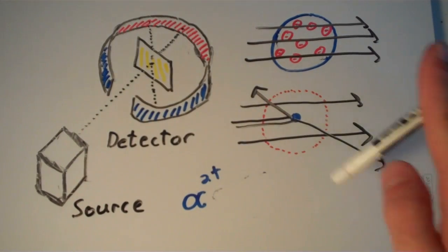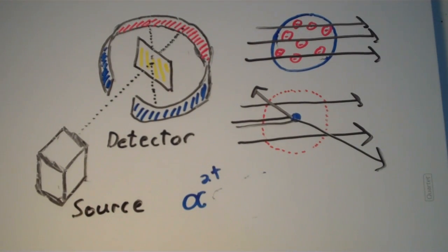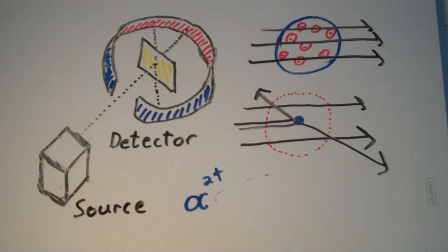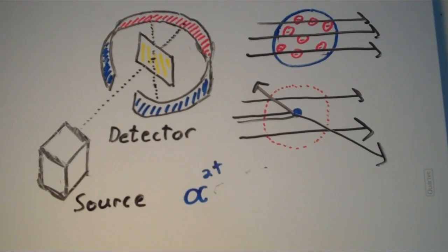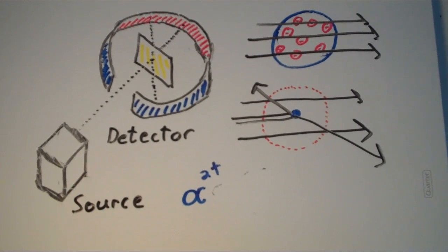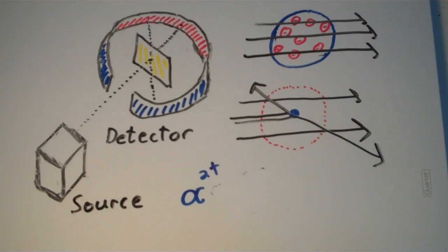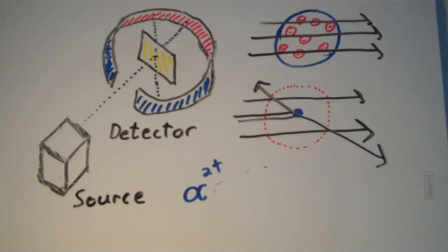And like I said, in order to account for this observation, Rutherford concluded that there must be some small portion by volume that contains nearly all of the mass and all of the positive charge. So based on these results, Rutherford was able to develop his nuclear theory.